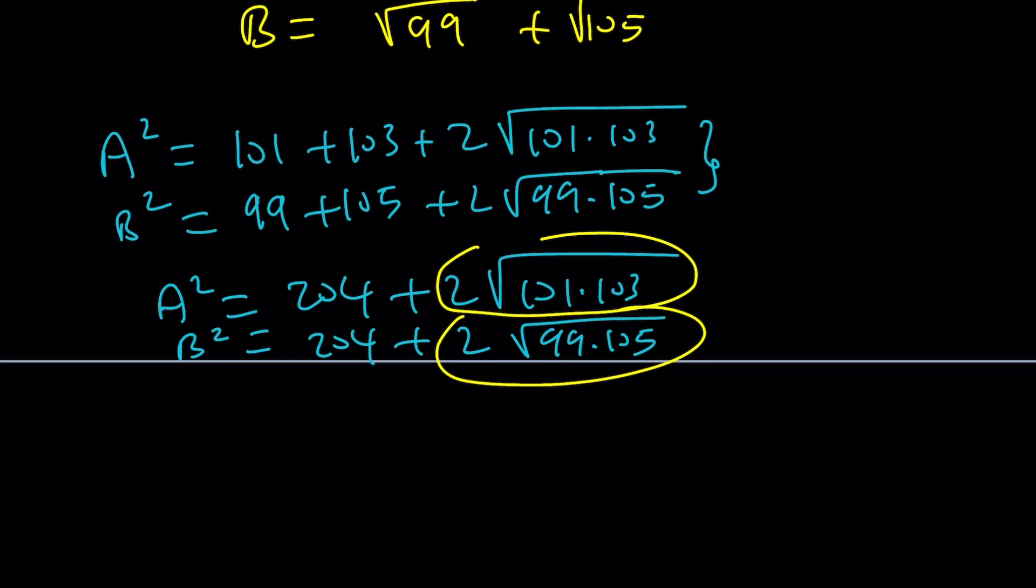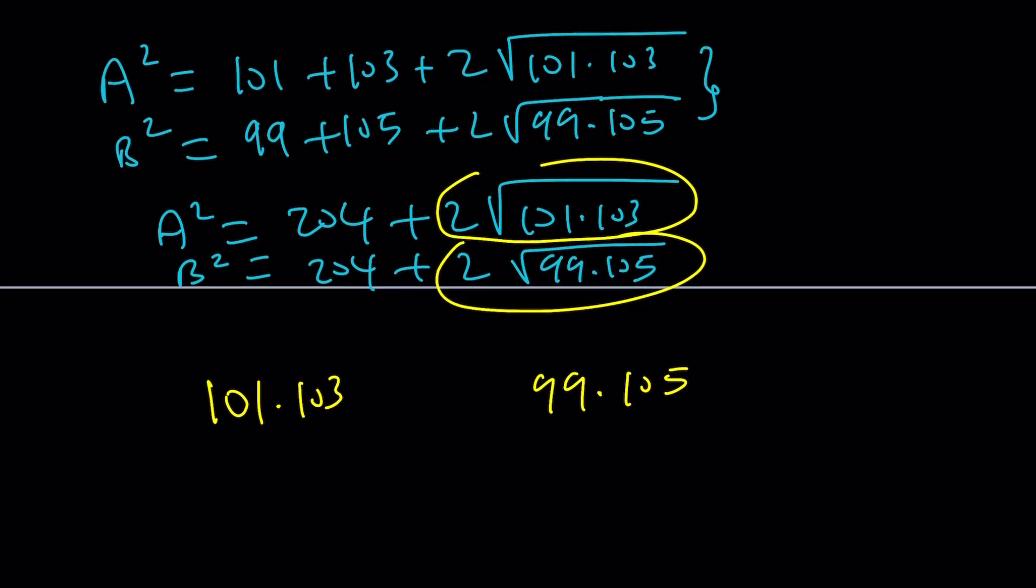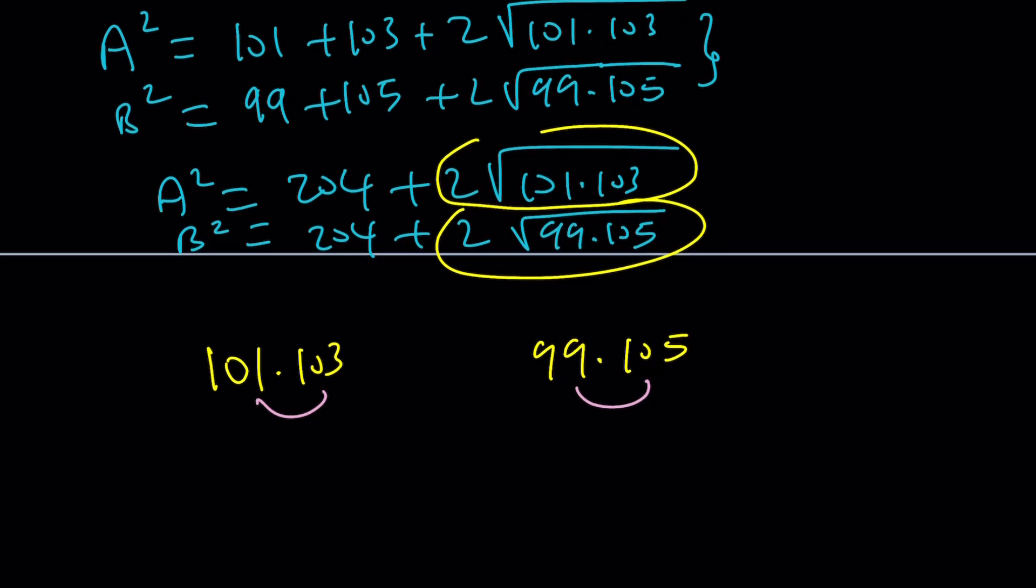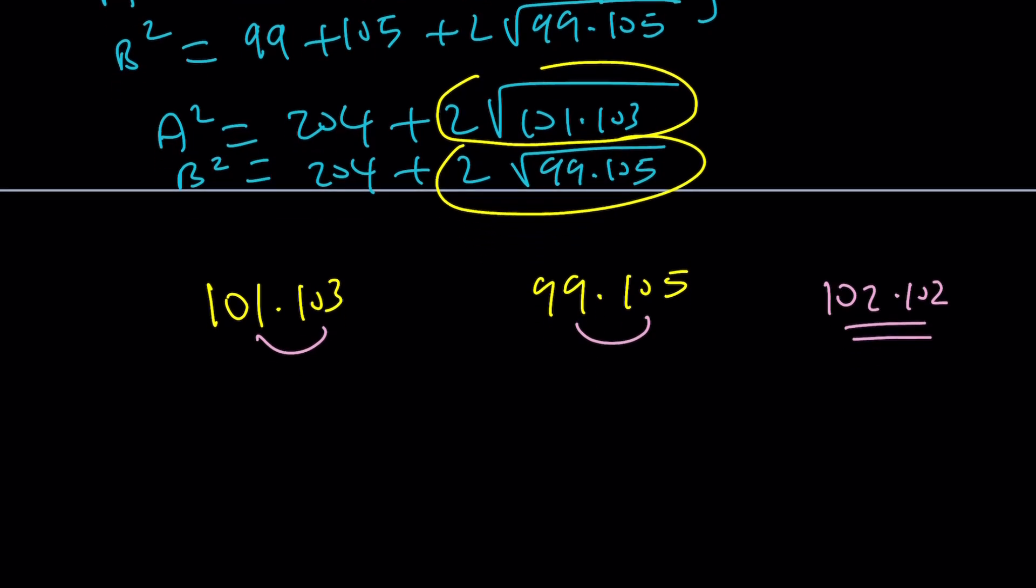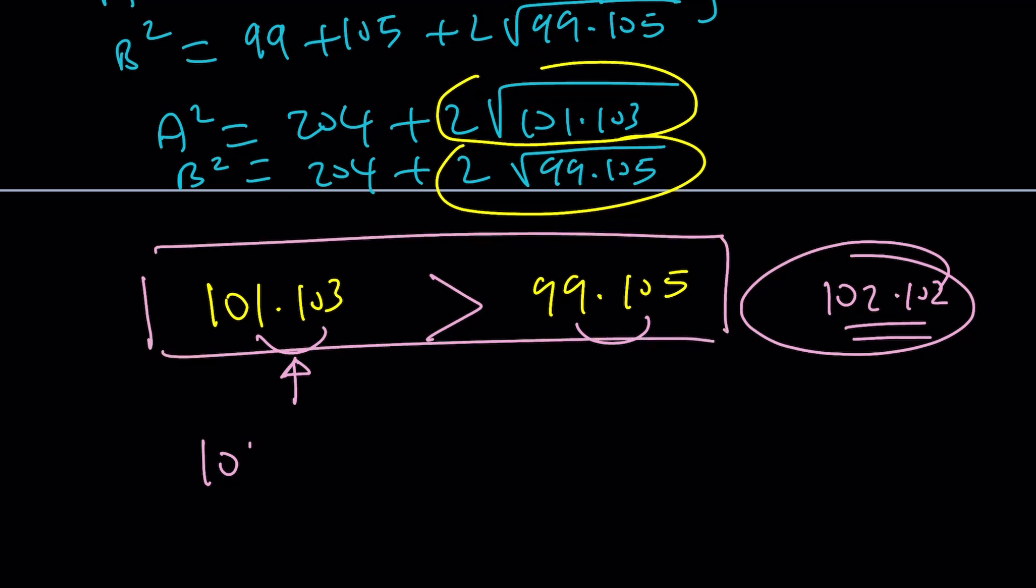What really makes the difference is we have to compare these two pieces. We need to compare 101 times 103 and 99 times 105. Here, the sum of these two numbers is constant. When the sum is constant, the product is going to be largest when the factors are the closest, which means when they're equal. In other words, 102 times 102 is going to give you the maximum value. And these are smaller than that. So to make the product larger, you have to increase these numbers. But this is closer to this. Therefore, 101 times 103 is going to be greater than the other number. So it'll be our winner again.